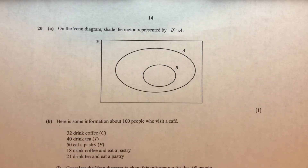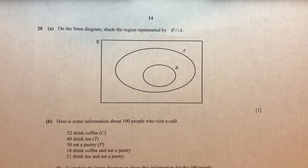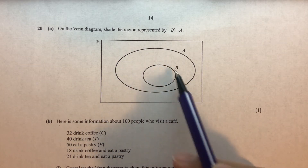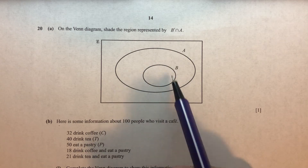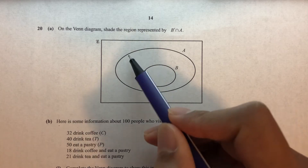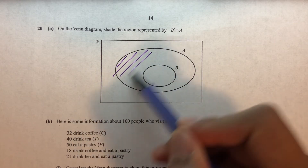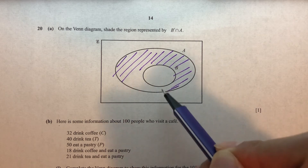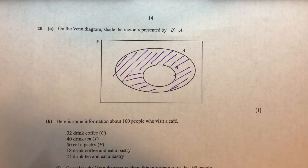Question 20. On the Venn diagram, shade the region represented by B' intersection A. A is the big set, B is the other big set. B' is everything outside B. Within set A, that will be only the part of A that does not include B — so just the left-only region of A, not including B.